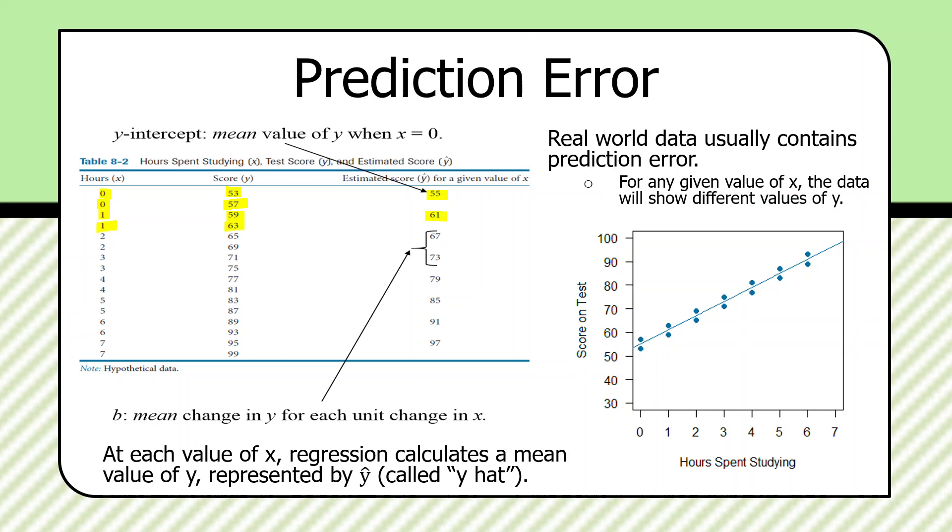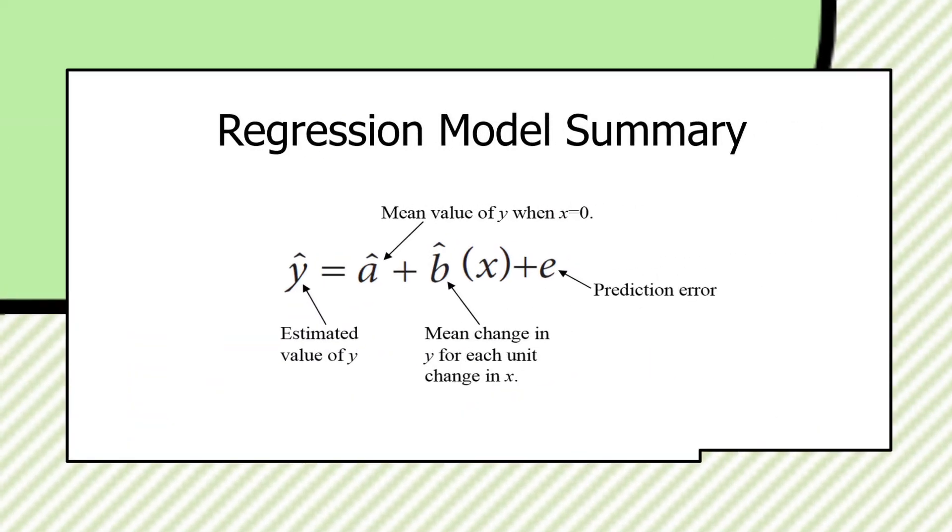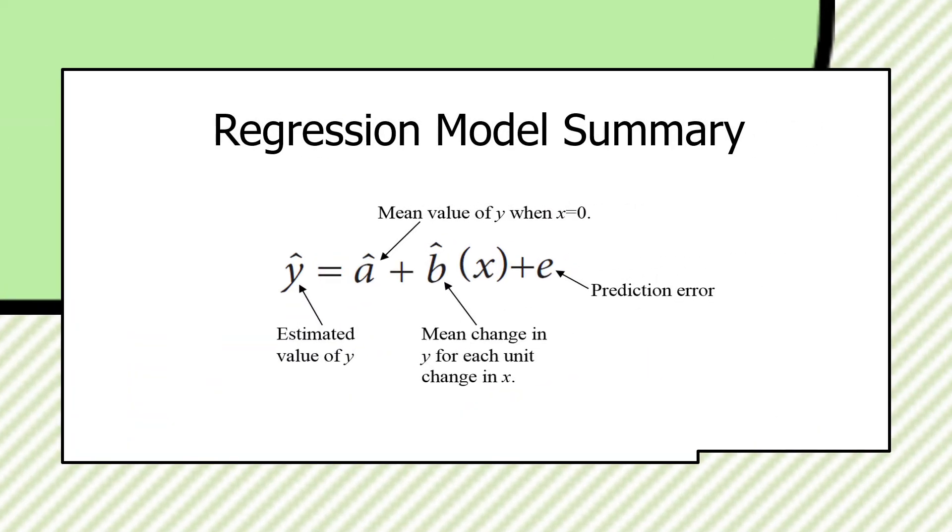So, just to summarize this part of the presentation on bivariate regression. This is a formal representation here. Y-hat, y with a little hat on top, this is the estimated value of y. A-hat is the mean value of y when x is zero. And sometimes regression just has to estimate this because there may not be any cases for which x is zero. But regression will estimate that value of y-hat anyway.